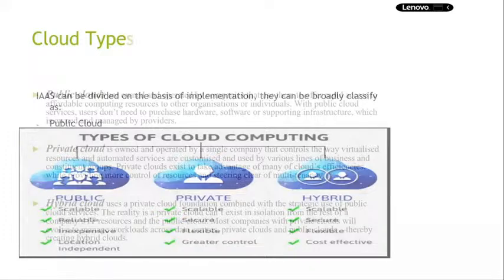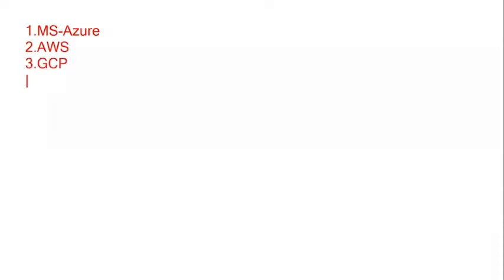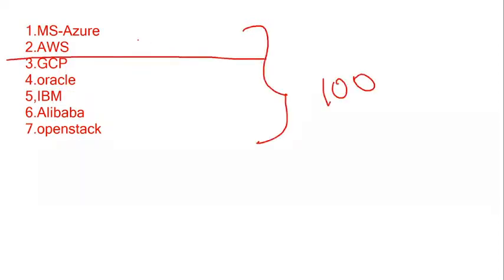To provide cloud computing, there are many vendors. One is Microsoft Azure, second is AWS, third is GCP (Google Cloud), fourth and fifth are IBM Cloud (IBM Bluemix) and Oracle Cloud, sixth is Alibaba, and we also have OpenStack. If you consider the cloud market as 100%, Microsoft Azure and AWS together have occupied 80%, and all the remaining — GCP, Oracle, IBM, Alibaba, OpenStack — have only 20%.